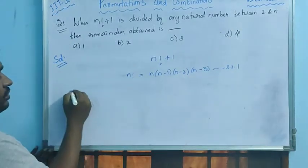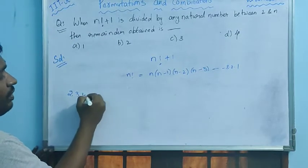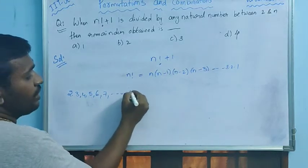Now, what are the numbers? 2, 3, 4, 5, 6, 7 up to n numbers.